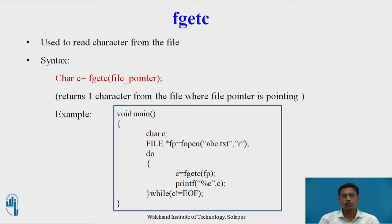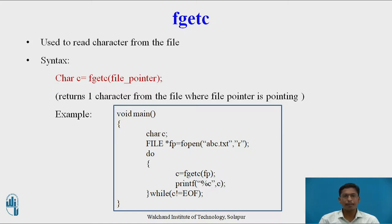In the example, in void main I declare a character variable c. FILE *fp = fopen("abc.txt", "r") opens abc.txt in read mode. I use a do-while loop: c = fgetc(fp) reads one character stored in c, then printf("%c", c) prints it. The loop continues until c is not equal to EOF (end of file), which is a special character indicating the end of the file. This program prints all characters present in the file.